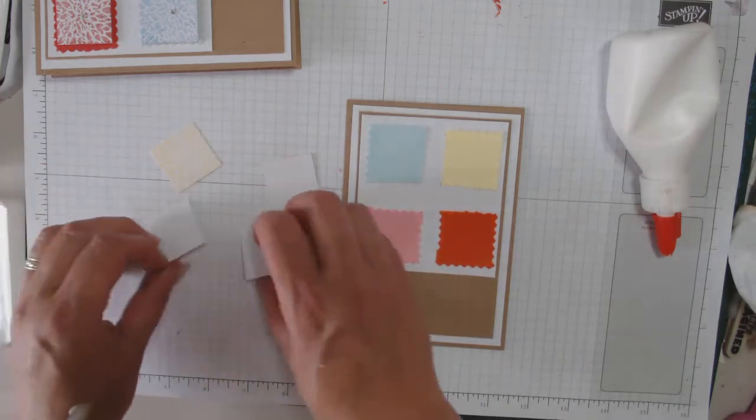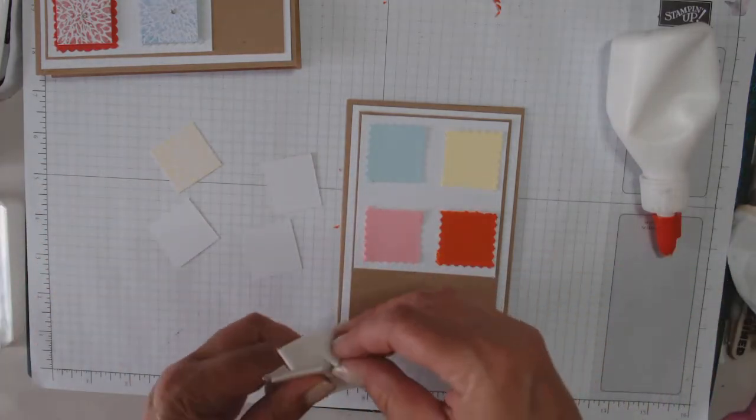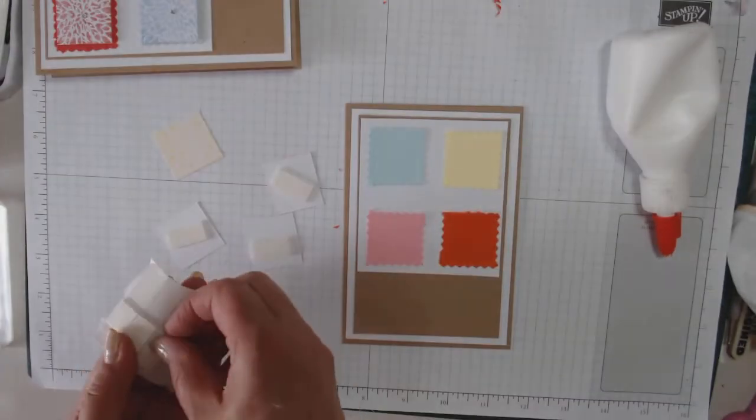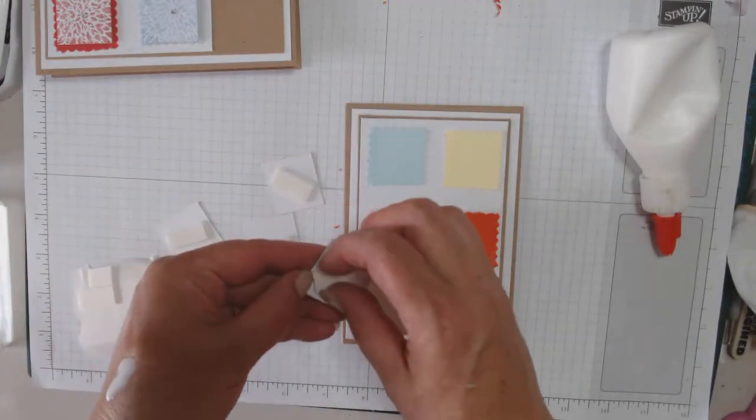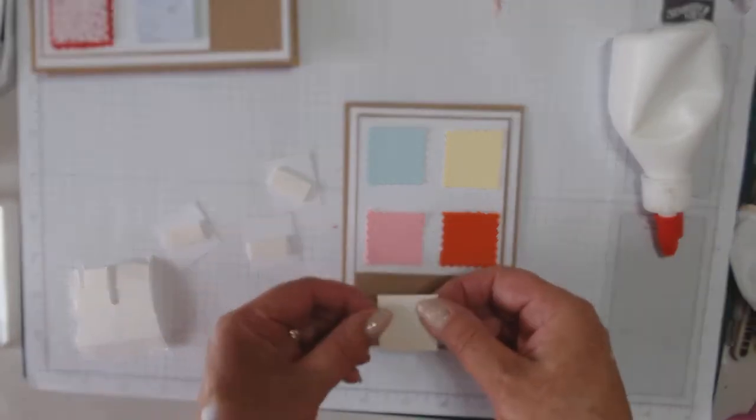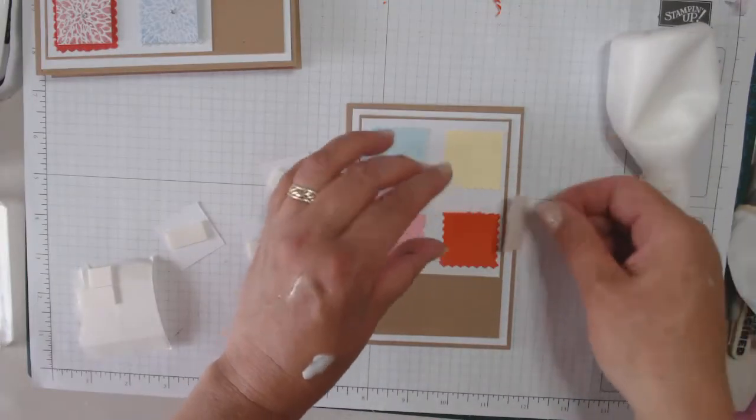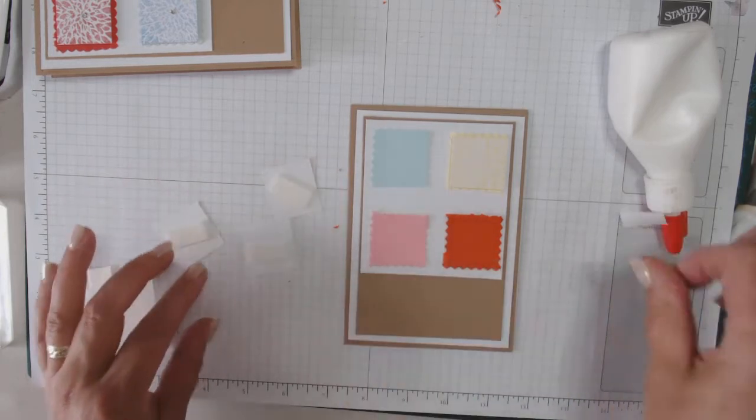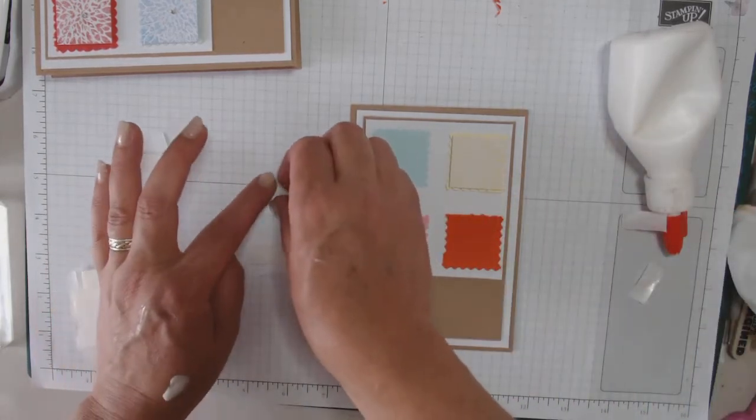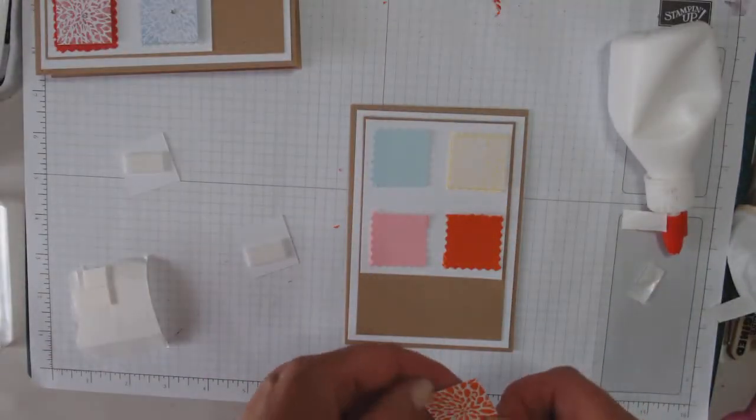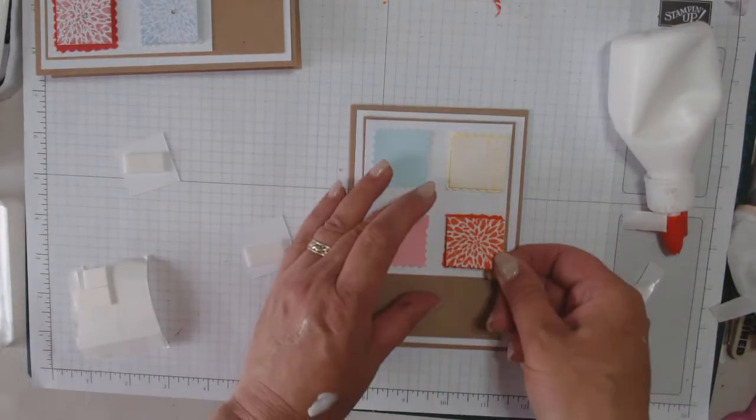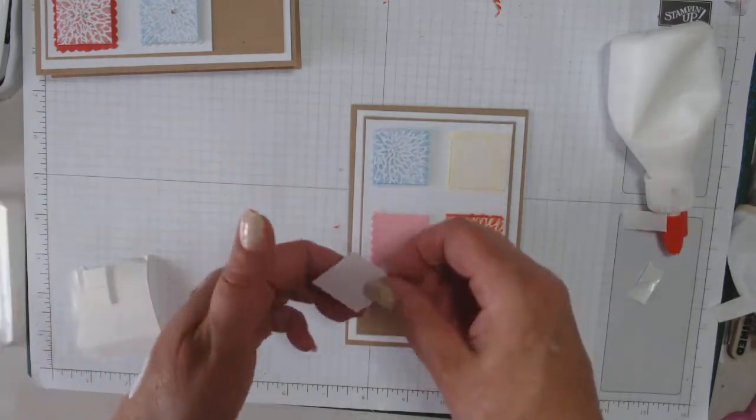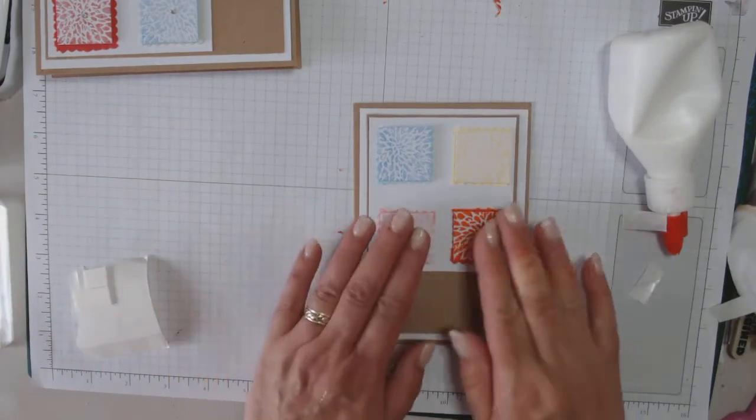Then get some dimensionals. I'll just place some on. Quick and easy card for you today. See that one? Blue one, pink one, like that.